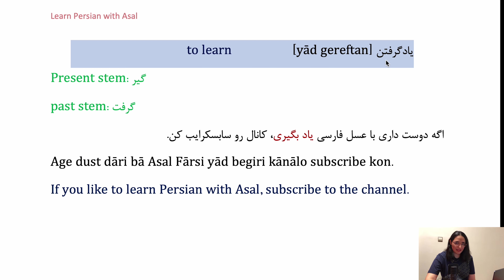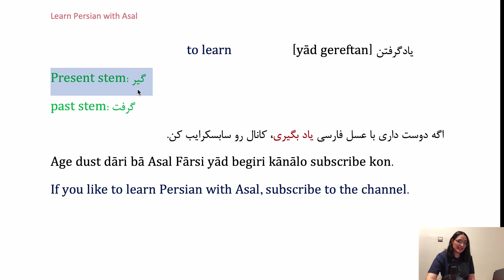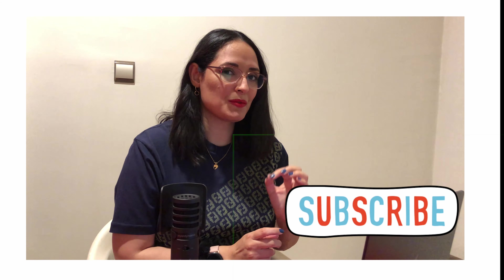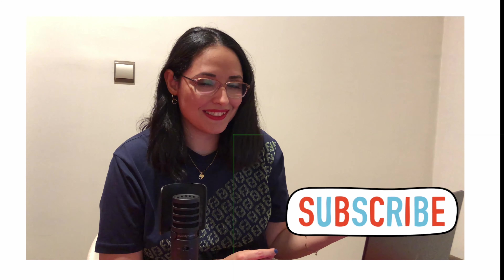Yad geriften — to learn. It's also a compound verb. The present stem is gir and the past stem is gereft. Example: Age doostari ba Asal farsi yad begiri, kanal ro subscribe kon — If you want to learn Persian with Asal, subscribe to the channel. Well guys, if you want to support Learn Persian with Asal channel, you can subscribe and also find extra examples on Patreon.